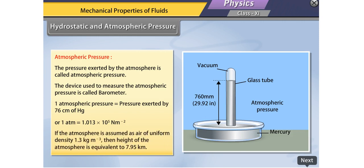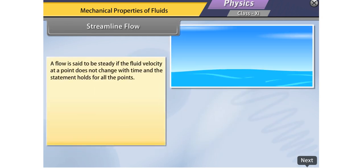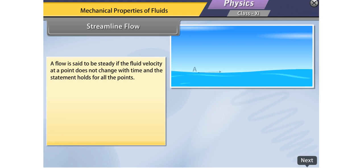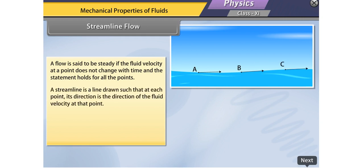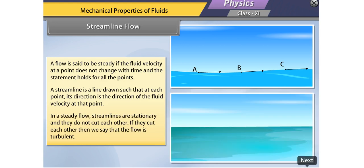If the atmosphere is assumed to be air of uniform density 1.3 kg/m³, then the height of the atmosphere is equivalent to 7.95 km. In steady flow, if the fluid velocity at a point does not change with time, the flow is streamlined. A streamline is a line drawn such that at each point its direction is the direction of the fluid velocity at that point. In steady flow, streamlines are stationary and do not cut each other. If they cut each other, the flow is said to be turbulent.